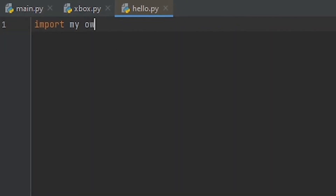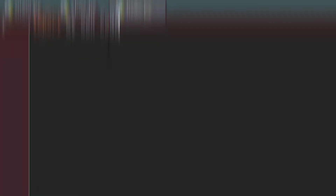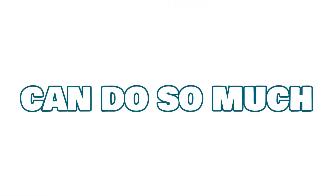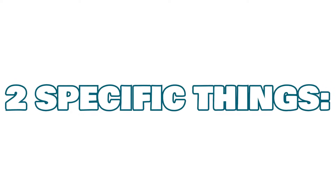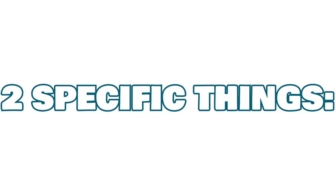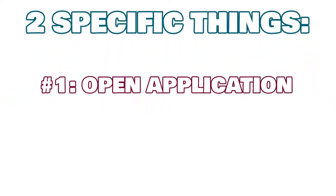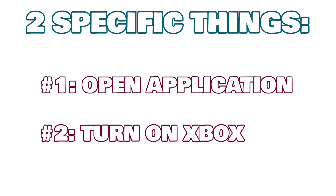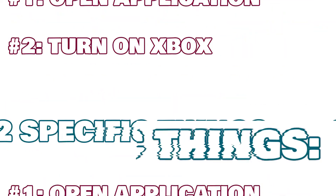After I made sense of the code and did a few test runs making sure everything worked, I wanted to write some of my own code. This AI setup can do so much — you can do anything with it. There were two specific things I wanted to try: number one, open an application on my computer using the AI; and number two, figure out how to remotely start an Xbox using this AI program. With those goals set in place, it's time to see if I can do this.